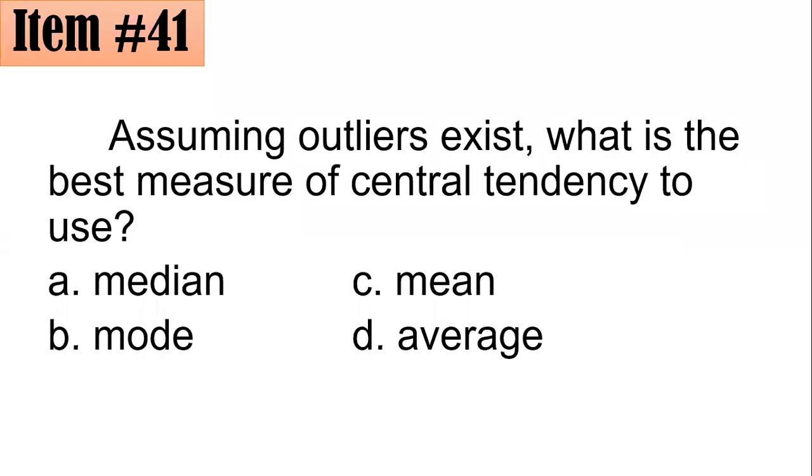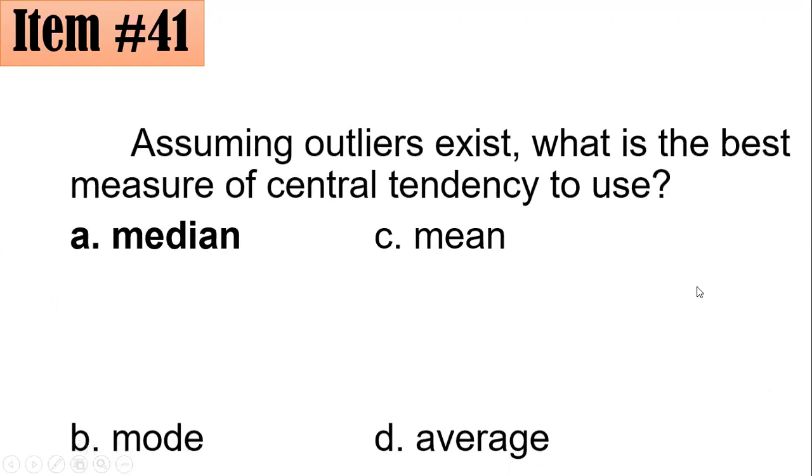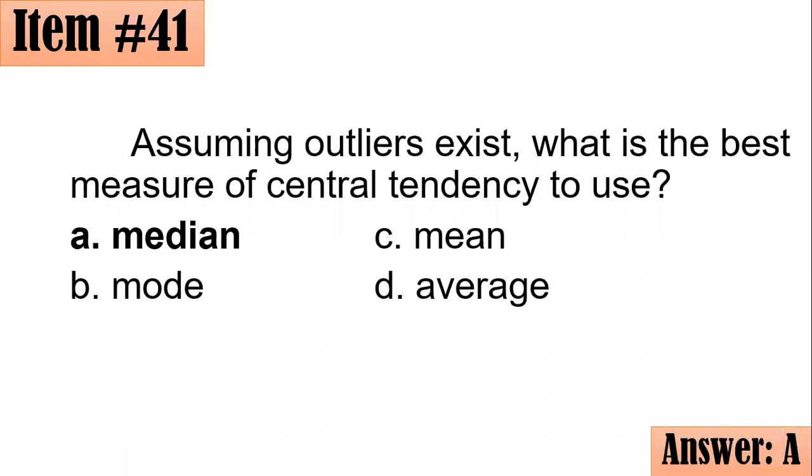Moving on to item number 41. Assuming outliers exist, what is the best measure of central tendency to use? Is it the median, mode, mean, or average? We have to remember this: when we speak about outliers, these are extreme scores, meaning they could be extremely high or extremely low scores. And if that happens, the mean is not the best measure of central tendency, but we have to resort to the median. Letter A.